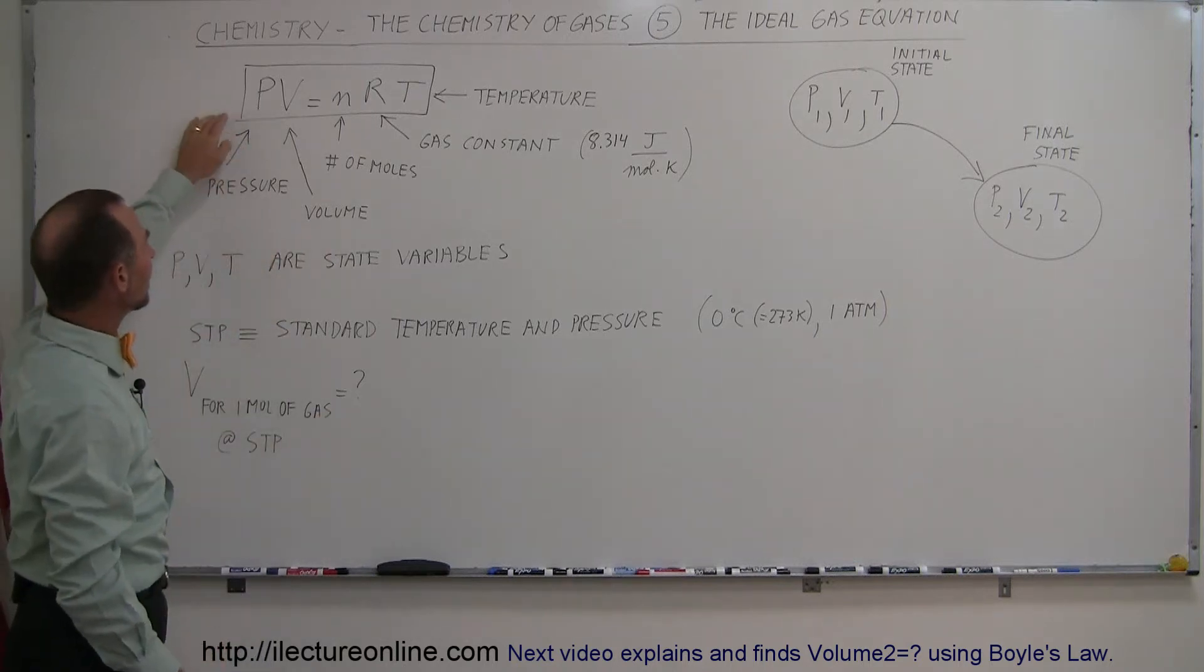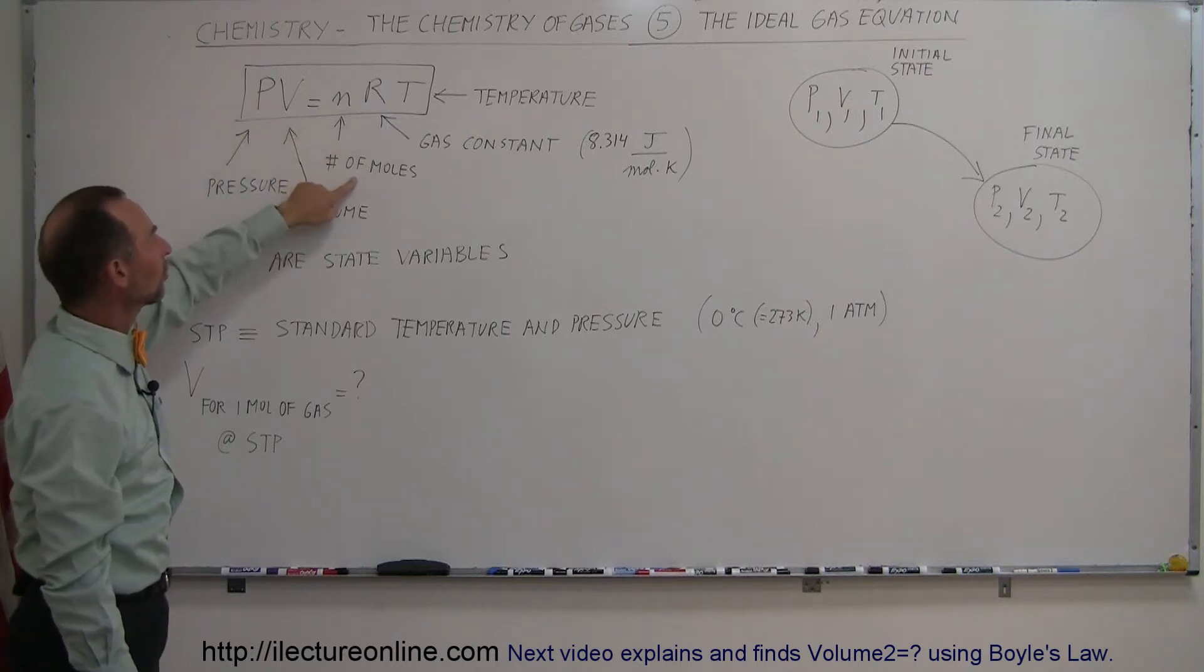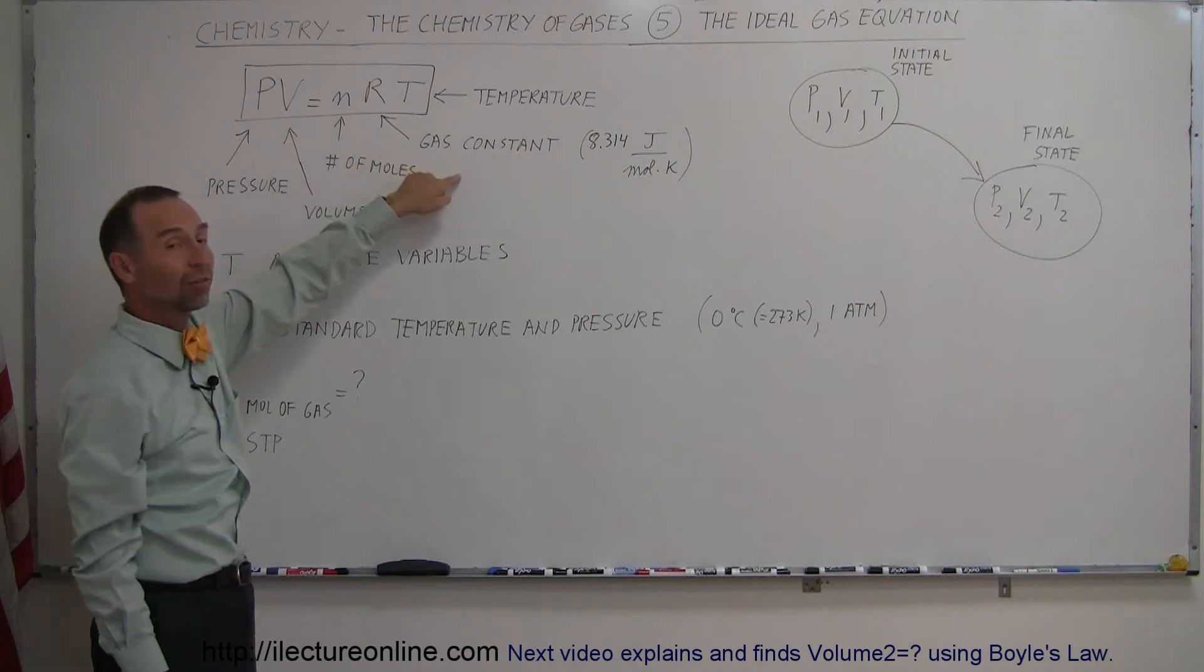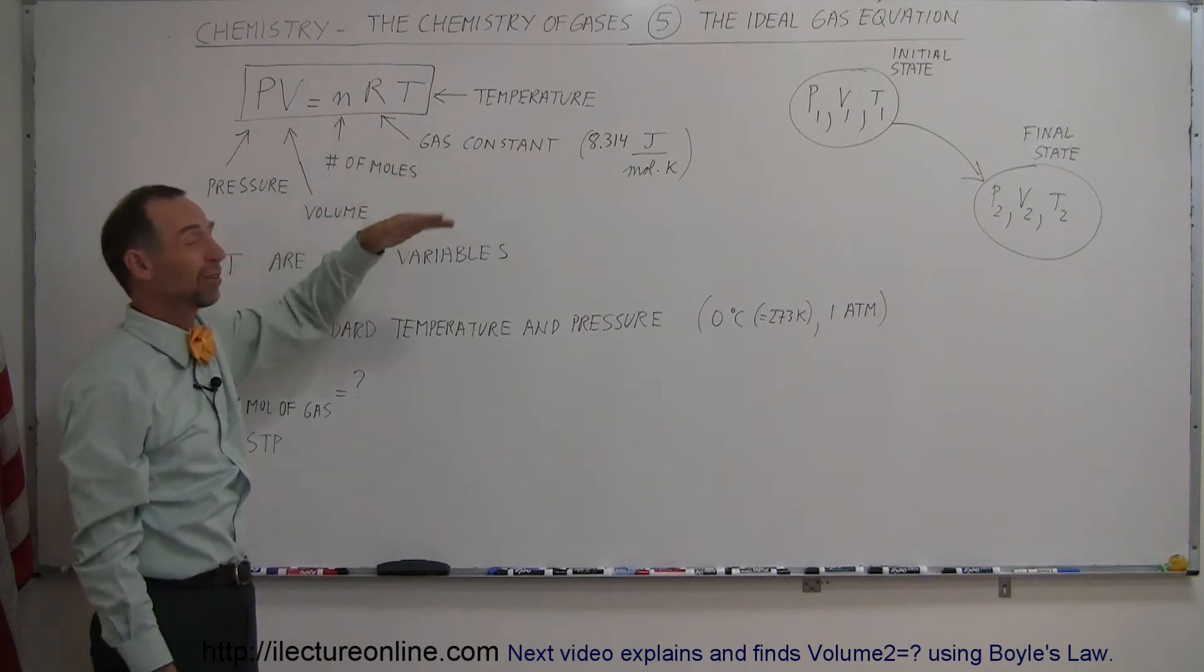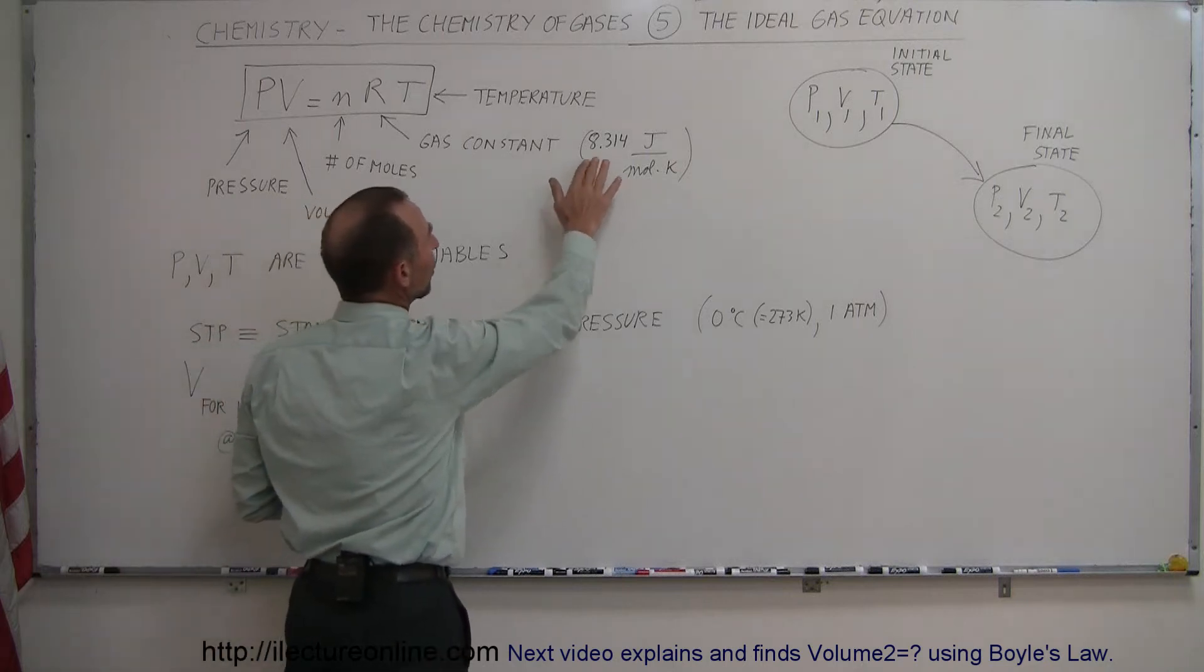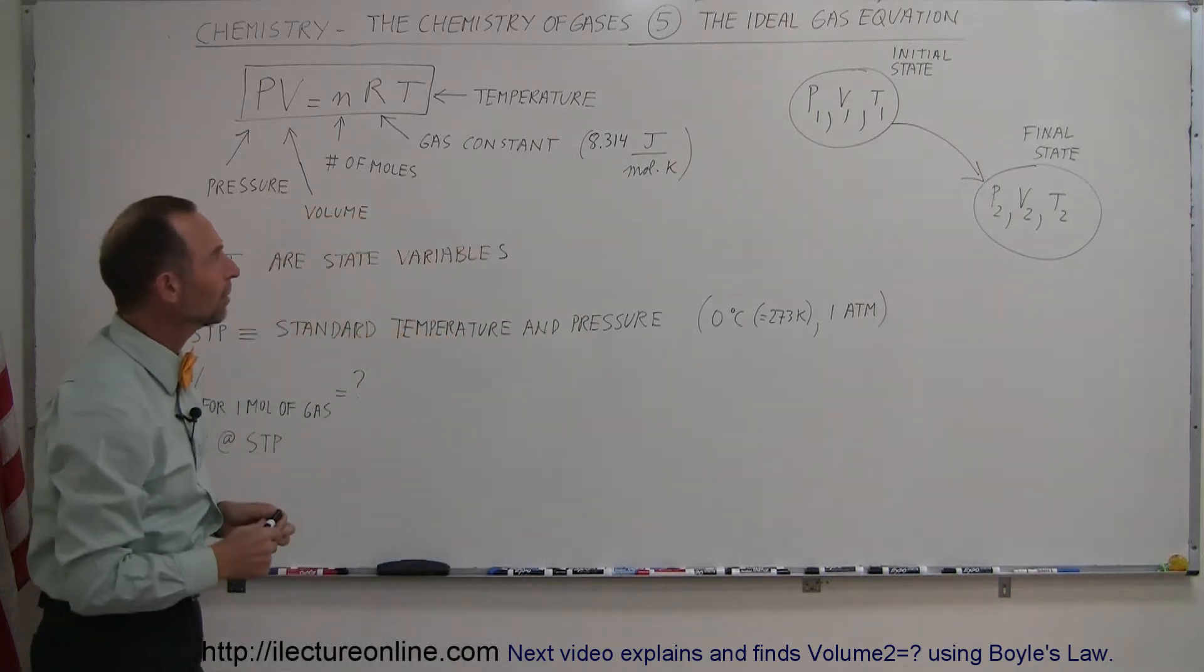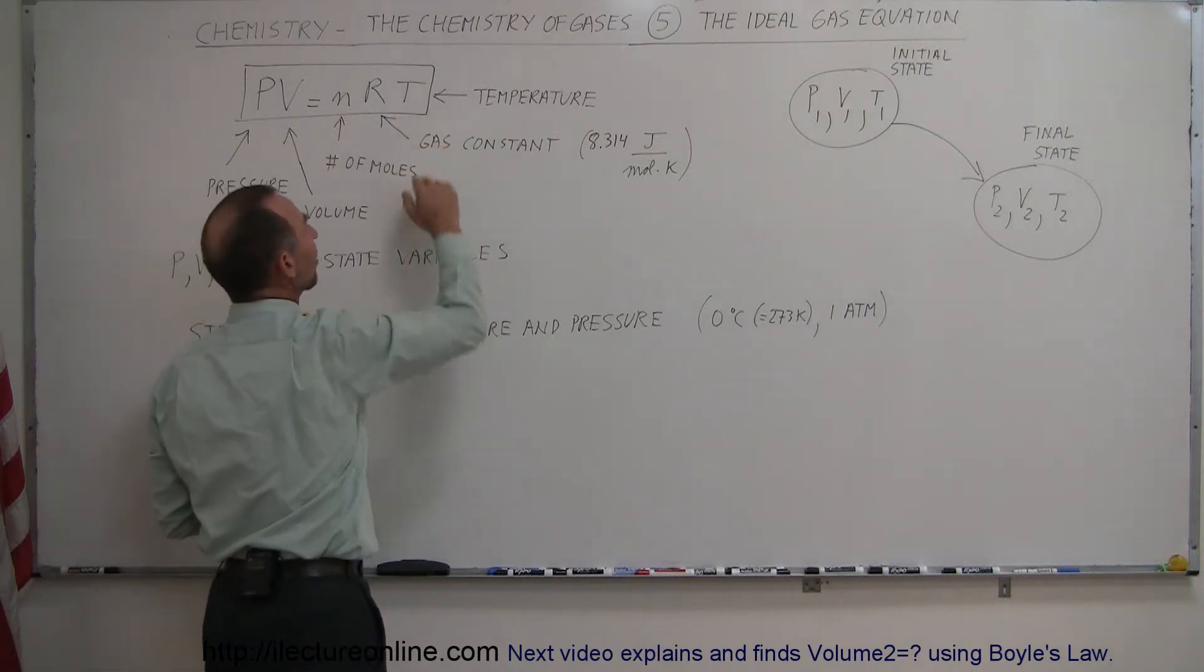P is the pressure of the gas, V is the volume of the gas, n stands for the number of moles of the gas, R is a constant of proportionality which was figured out through experimentation done a long time ago. We now know that it's 8.314 joules per mole per Kelvin, and T stands for the temperature.